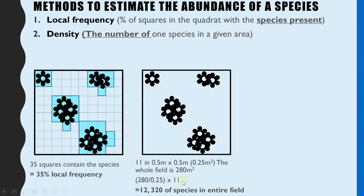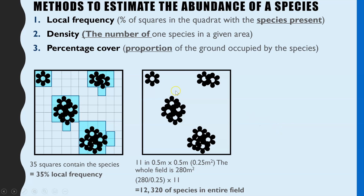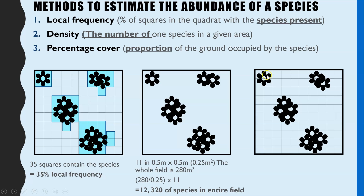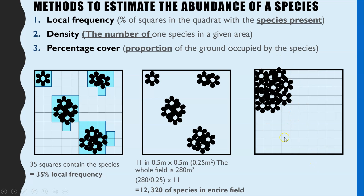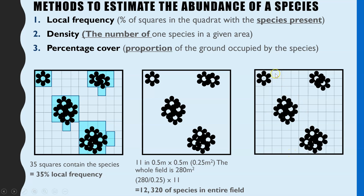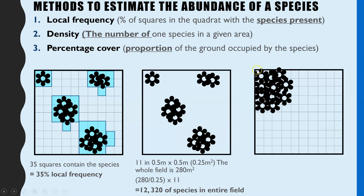The final method is percentage cover, where you estimate how many full squares out of 100 are completely covered by the plant. You have to visualise and estimate — if you were to squash all the plants together — how many full squares are covered. This can be tricky; sometimes people tear up pieces of paper over the actual plants and put all the pieces together to make it easier rather than doing it visually. In this example, approximately 18 full squares are covered, so the percentage cover is 18.